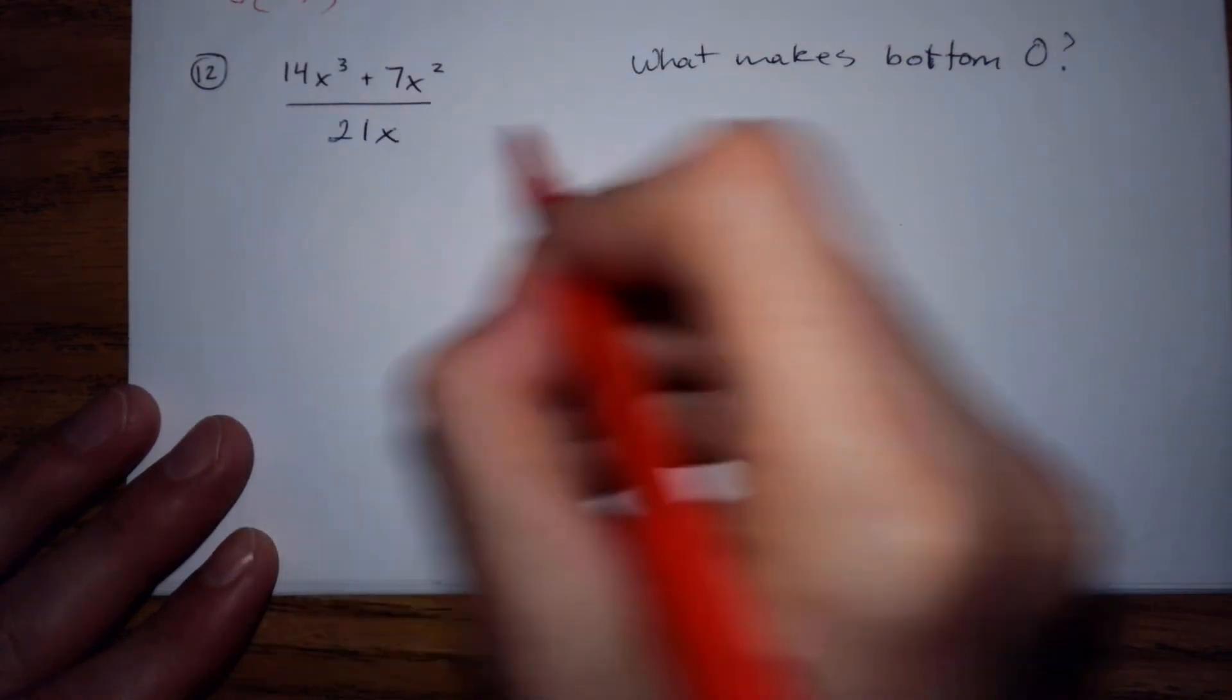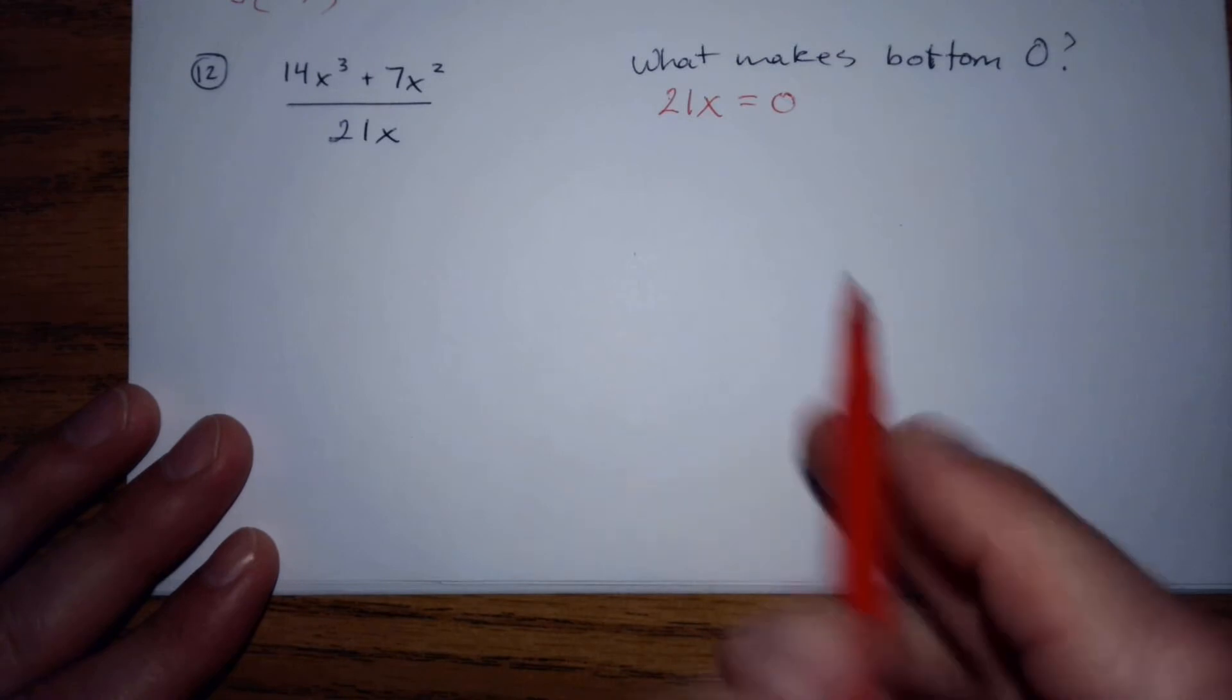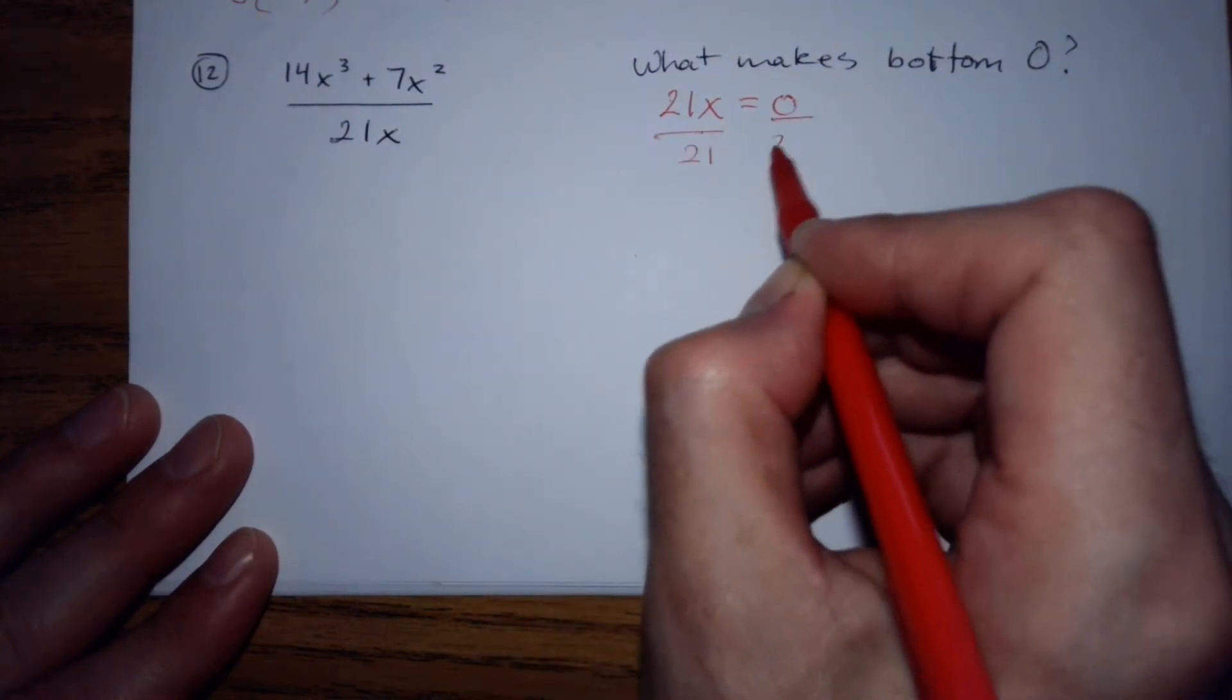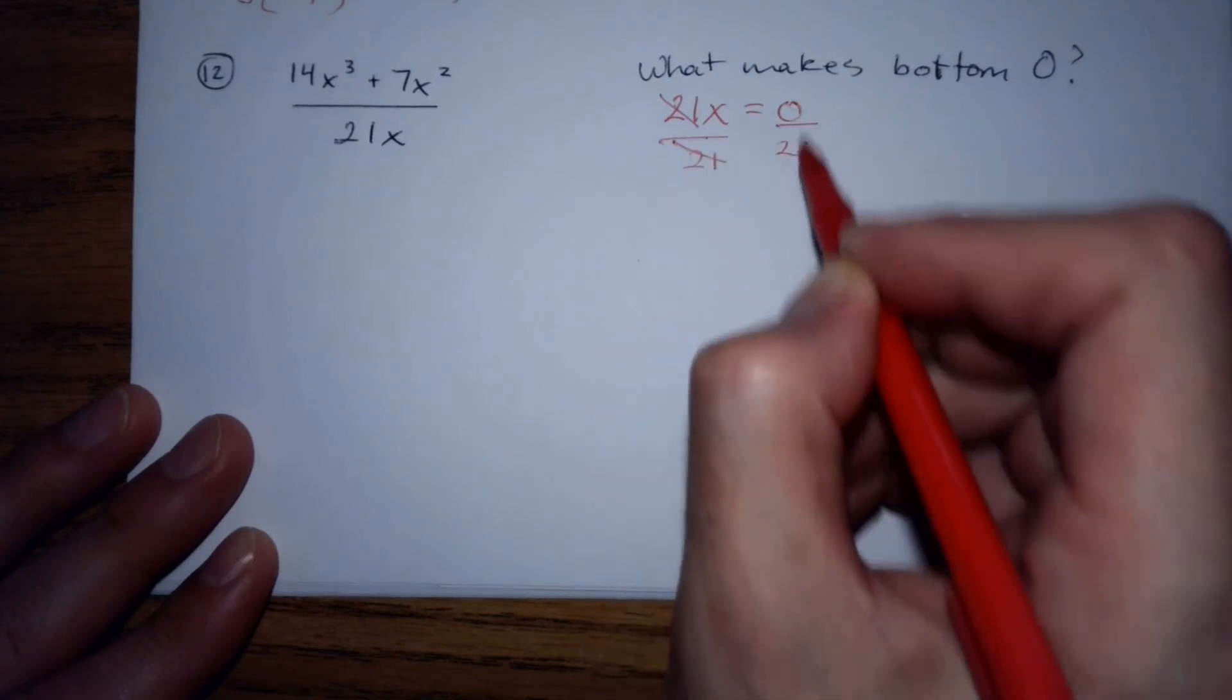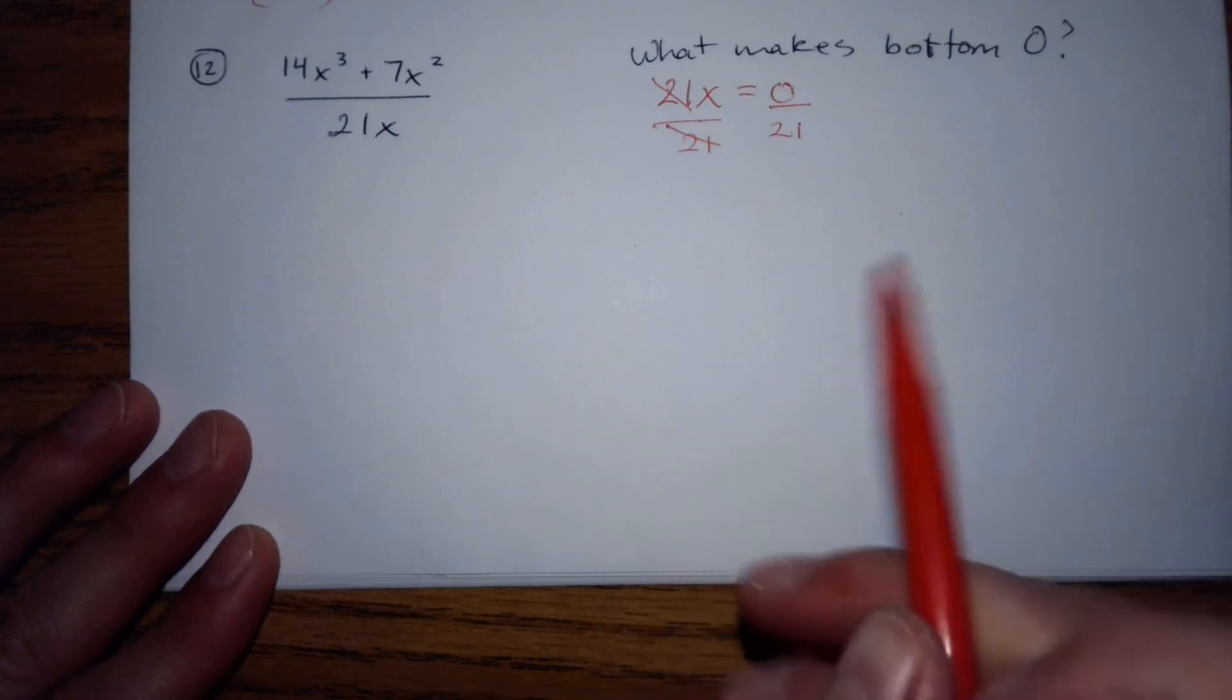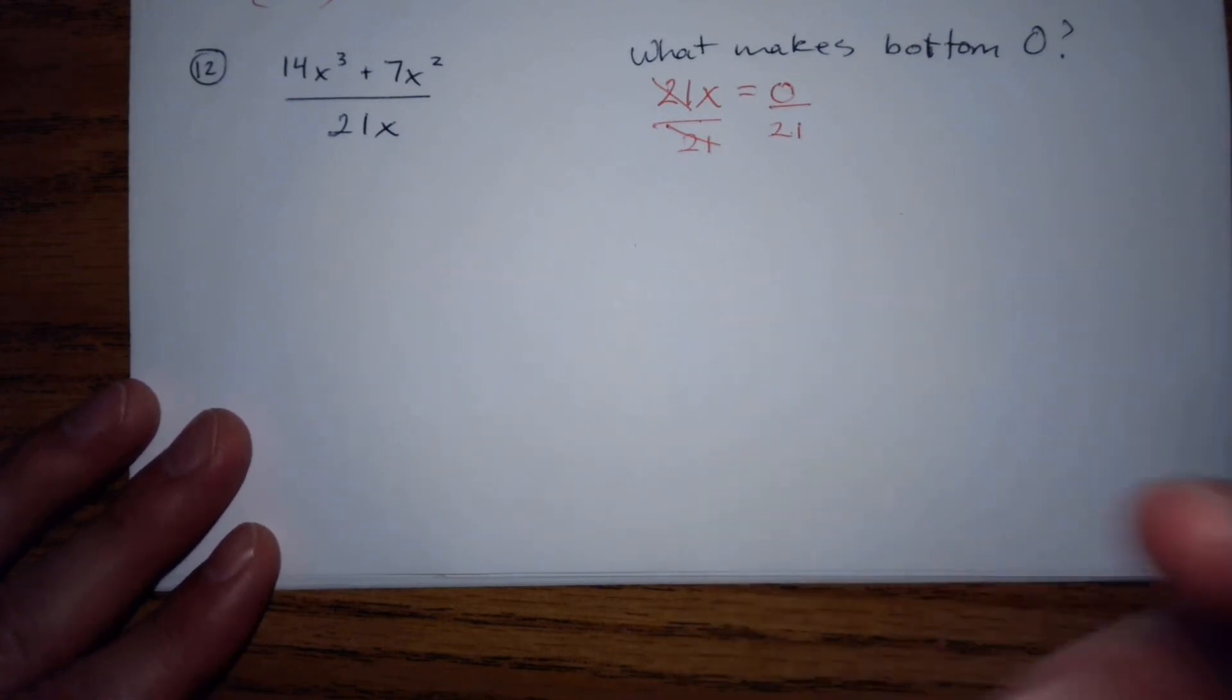We can take the bottom and set it equal to zero and solve. If I'm trying to get x by itself, you just divide by 21. Zero divided by 21 is still just zero. You take nothing, cut it into 21 pieces, you still have nothing. You didn't do anything.